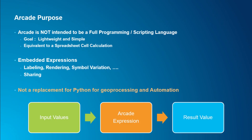Arcade is not intended to be a full programming or scripting language. It's intended to be very lightweight and simple — like a spreadsheet cell calculation. It really works like a calculator: it takes in input values, runs the logic of the expression, and returns a result. You use it for things like labeling or rendering, where you want to change labels or vary symbols. It's not a replacement for geoprocessing or automation — it has a very focused purpose.